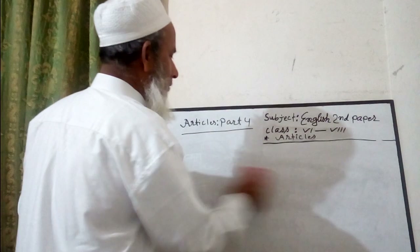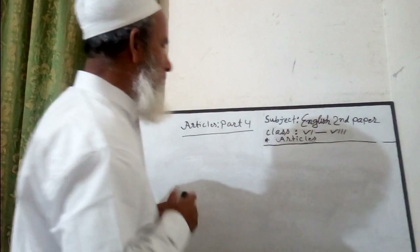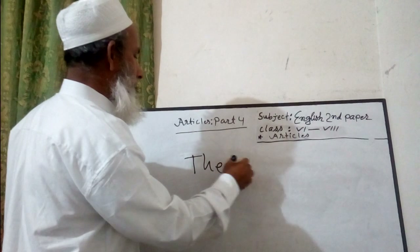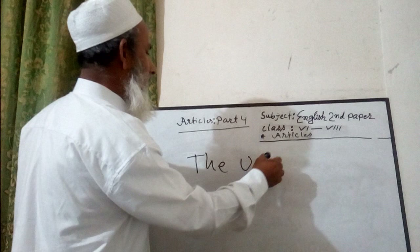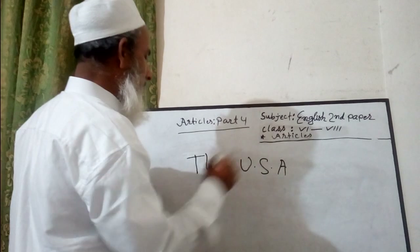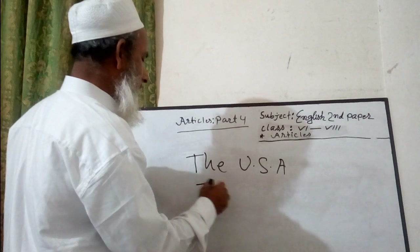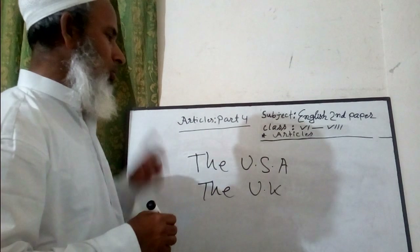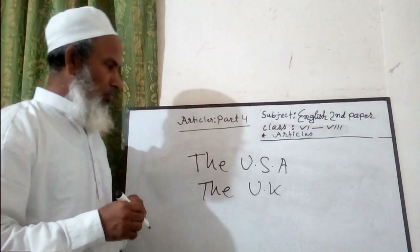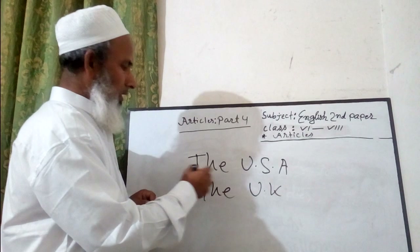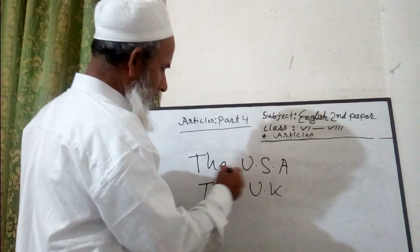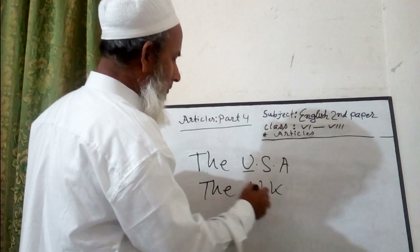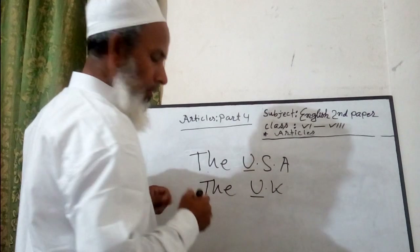'The' can be used before the names of countries which are collectively formed. For example, the USA — which means the United States of America — and the UK. These countries are collectively formed, so before them we use 'the'. The pronunciation is 'thee USA' and 'the UK' because the first letter of USA is a vowel.